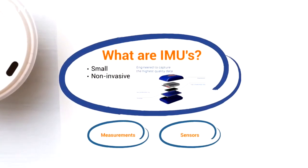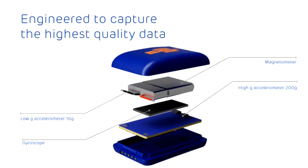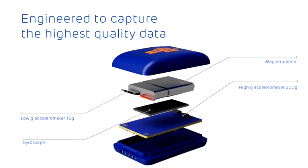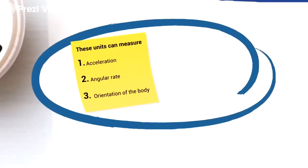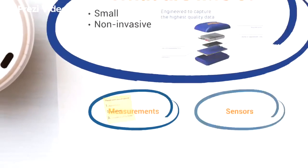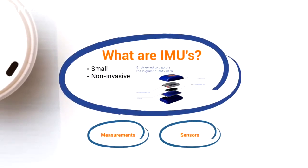IMUs are small non-invasive electronic devices with multiple sensors. These sensors usually include an accelerometer, a gyroscope and or a magnetometer. You can then attach these units to a specific body segment and they can measure acceleration, angular rate and orientation of the body at these specific body segments. So let's just take a closer look at these sensors used in IMUs as each sensor has different capabilities and uses.